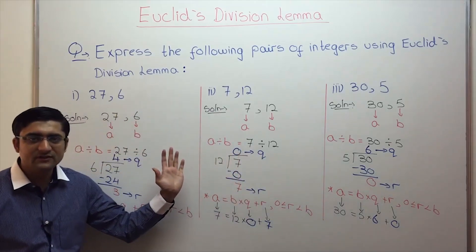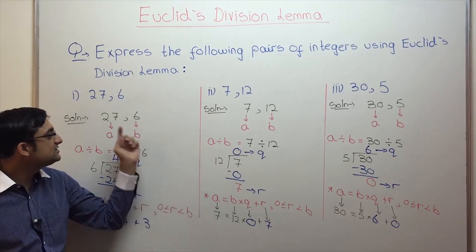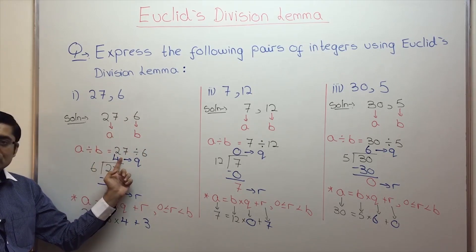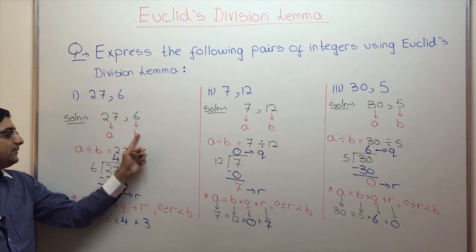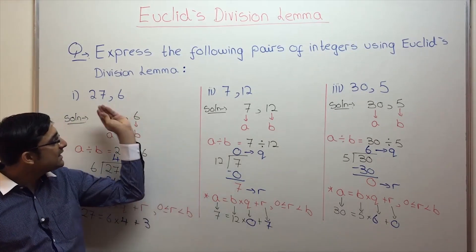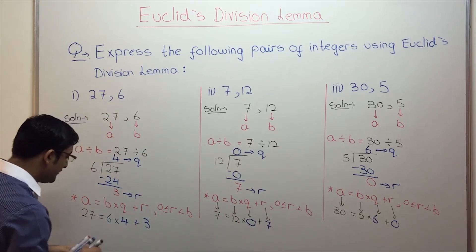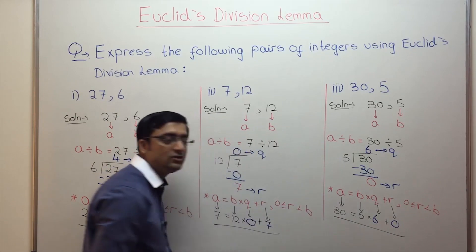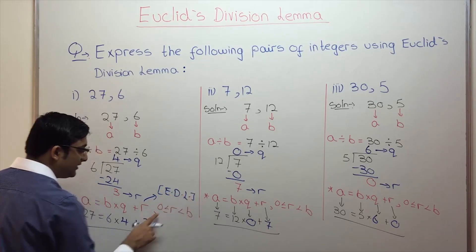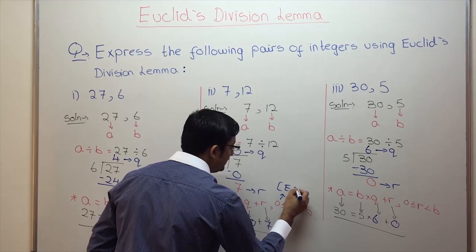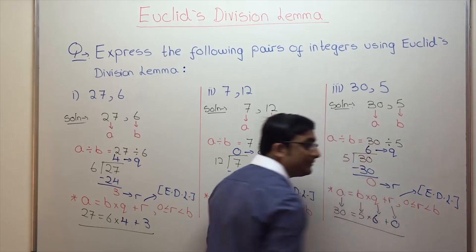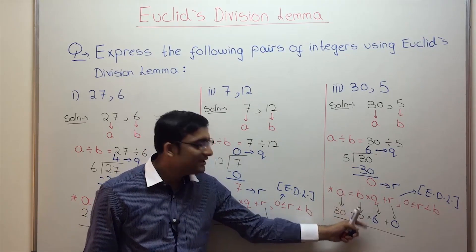So given any two positive integers, this is how you express them using Euclid's division lemma. The first step is label them as A and B — first integer as A, second as B, don't mix the two. Then do A divided by B. Label the quotient as Q and the remainder as R. State Euclid's division lemma and plug in the values. A good technique is to also mention in brackets E.D.L., meaning this is Euclid's division lemma — basically telling the examiner what this is.